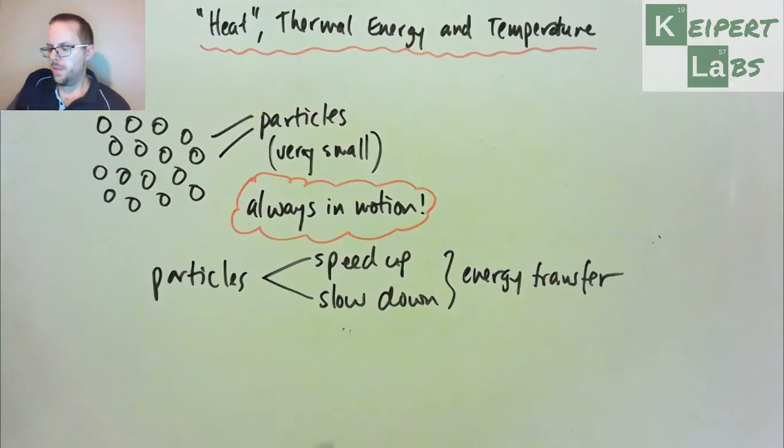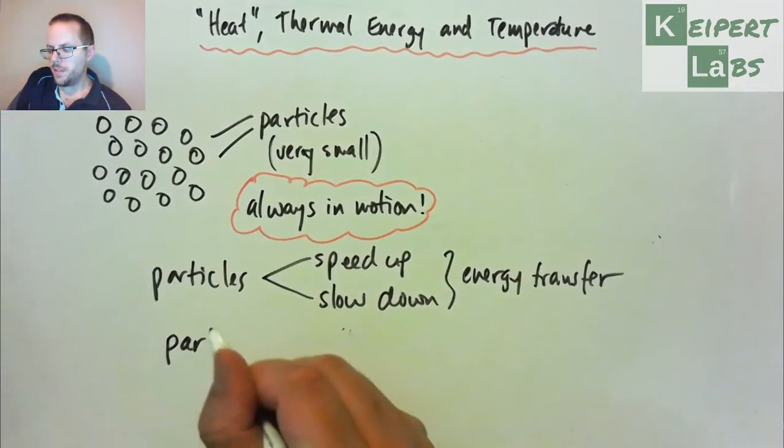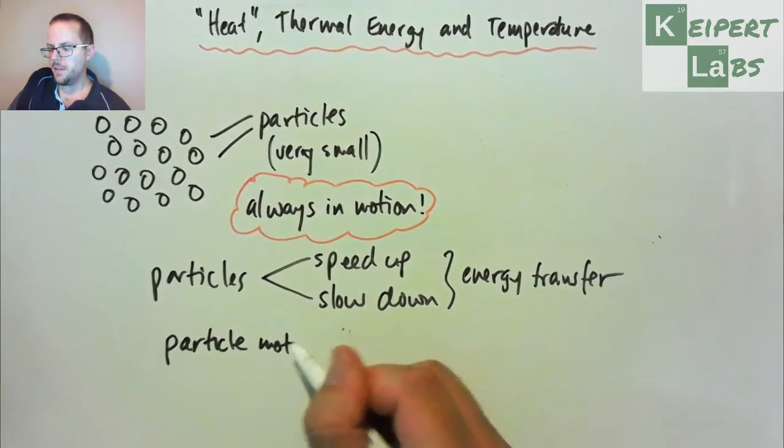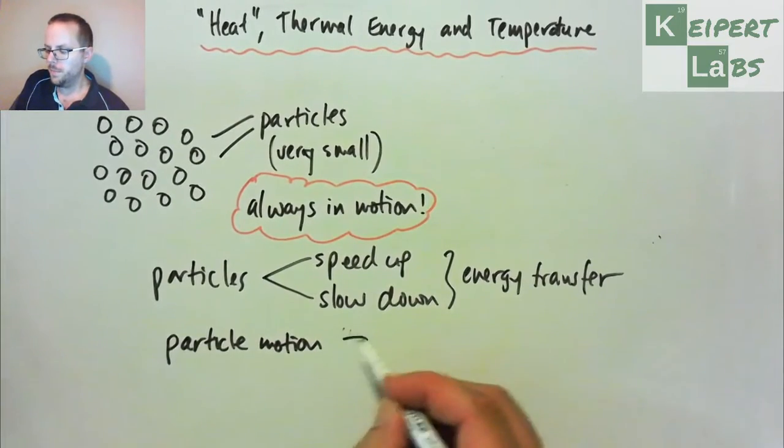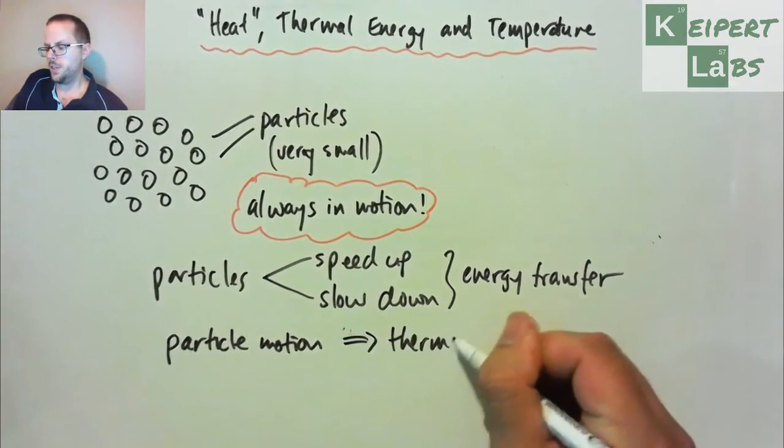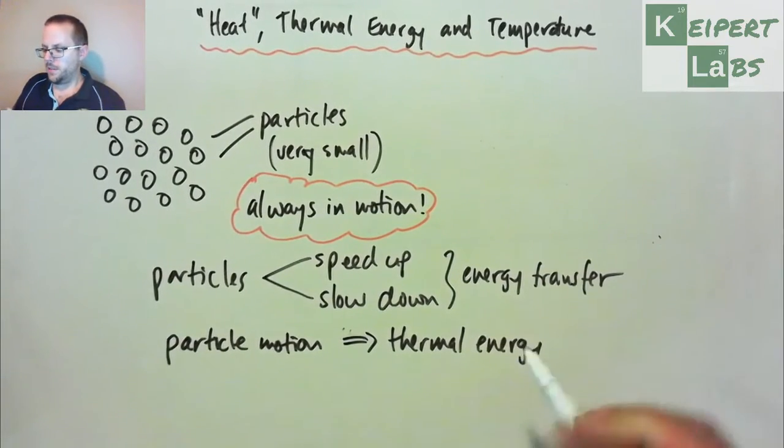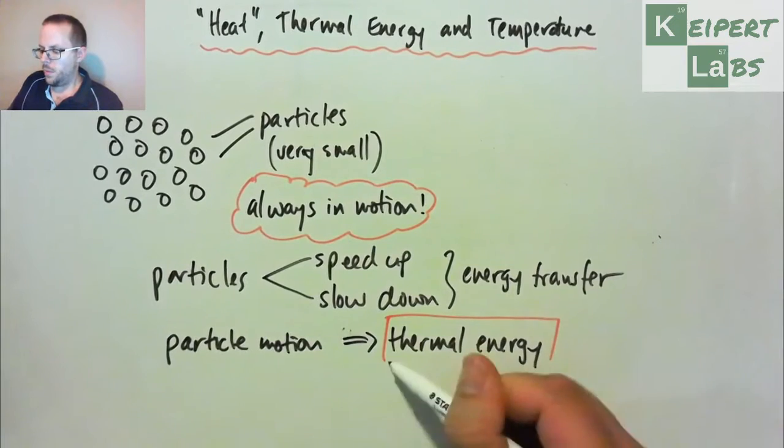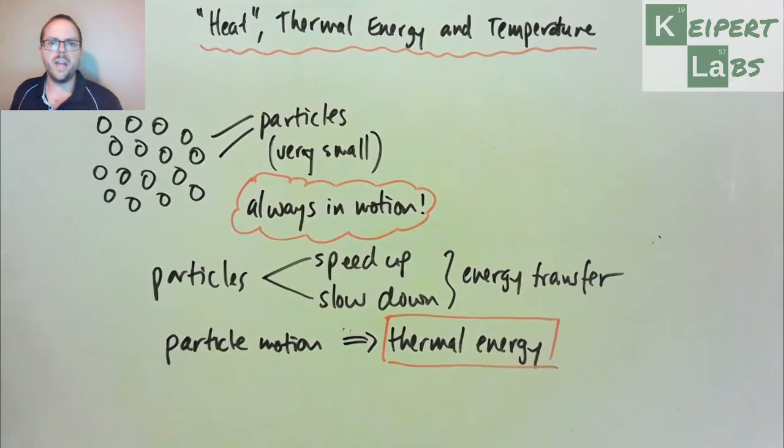What we want to get our heads around is that the energy that goes into particles moving is what we call thermal energy. When the particles are moving, energy is being stored in how they're moving, how much they're moving, how fast, where they're going. Are they jiggling on the spot, moving from one place to another, or turning over? That motion, the energy involved in that motion, is what we call thermal energy. That comes out of things we call hot things.